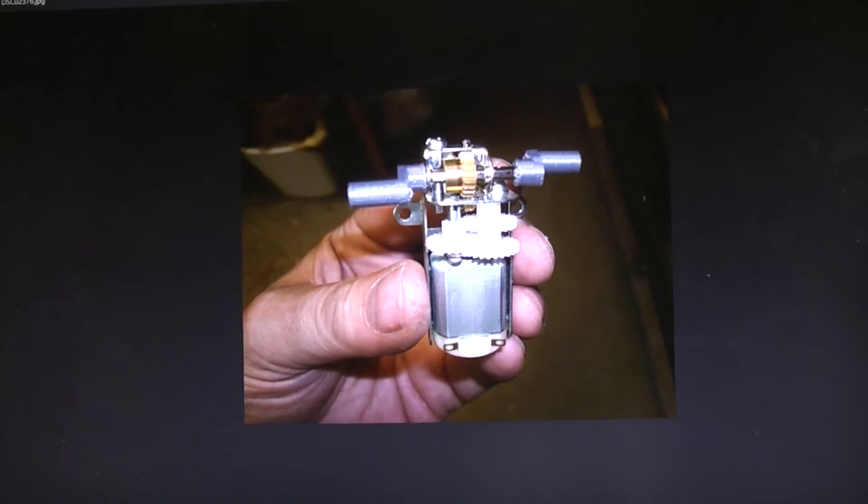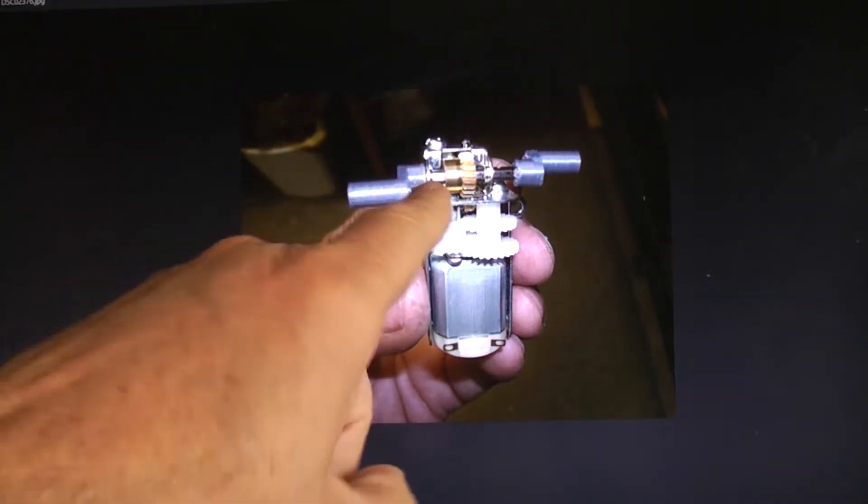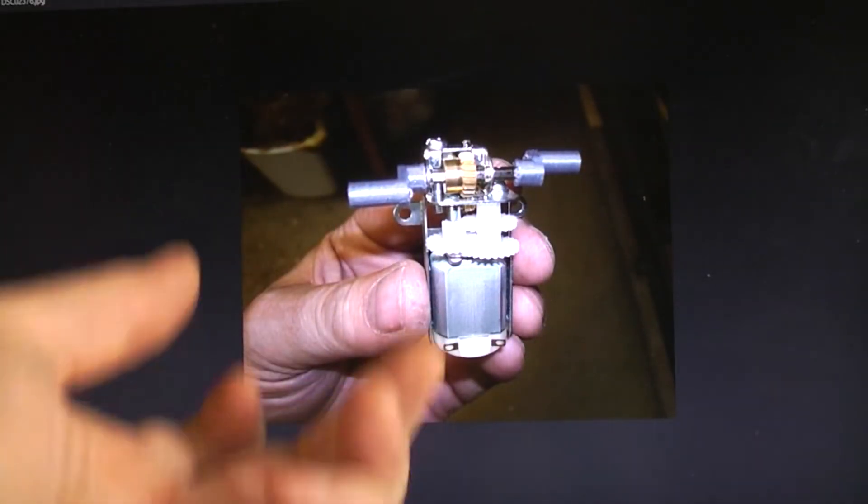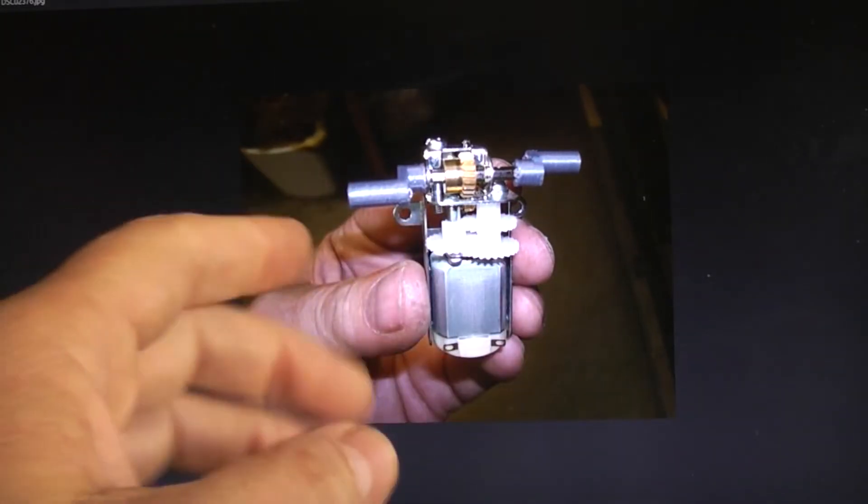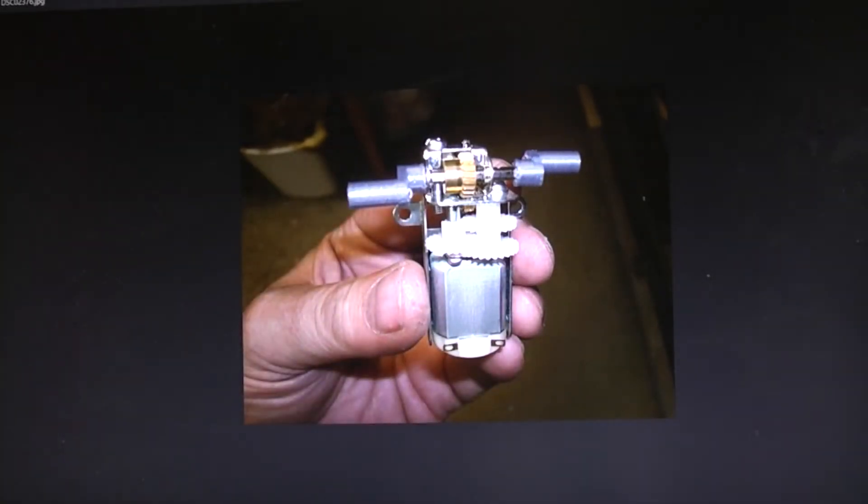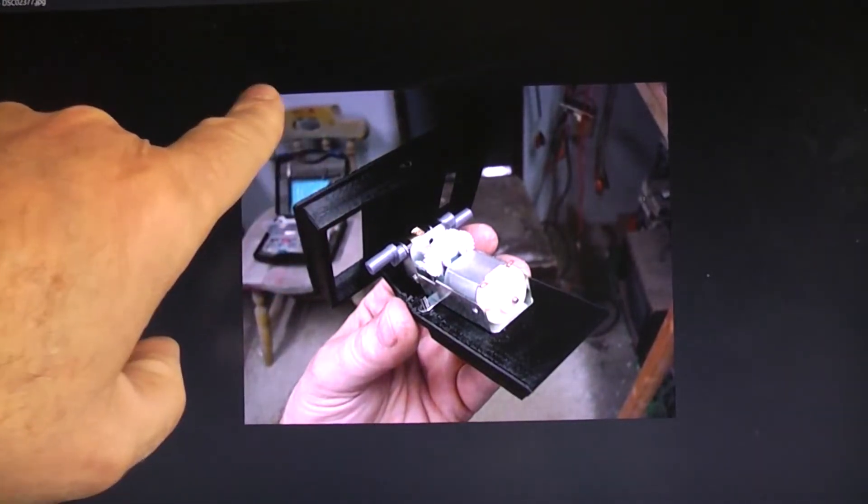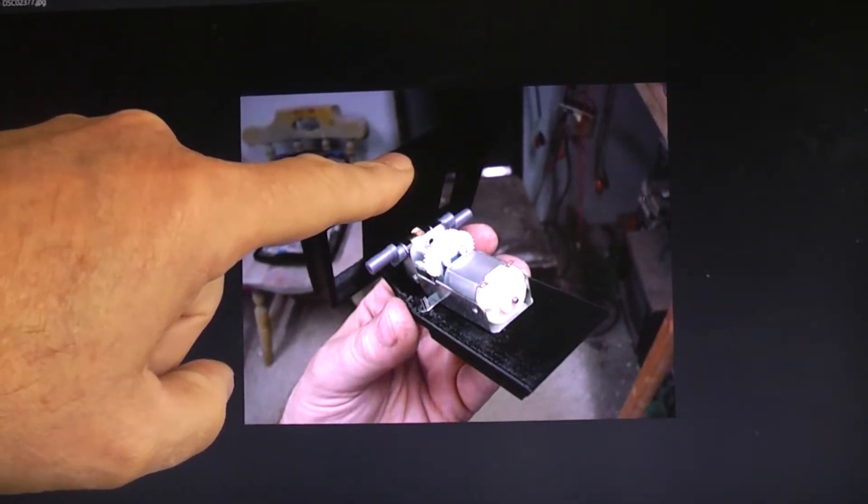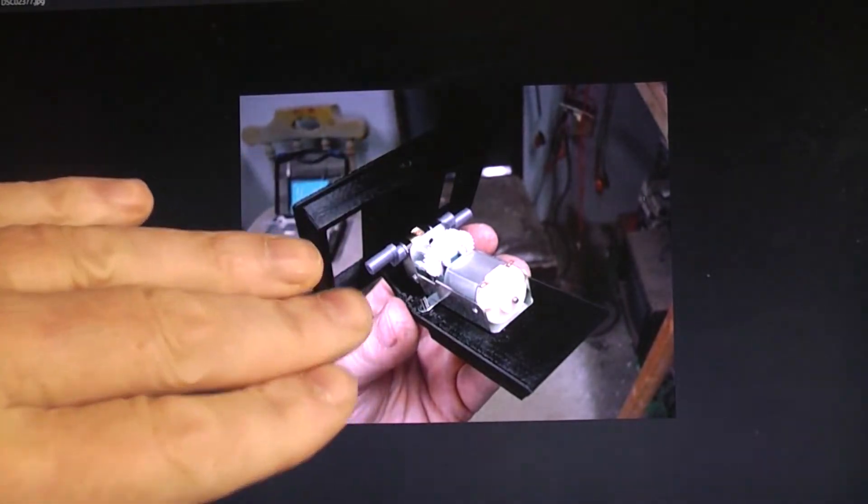There's a close-up of the Tamiya universal gearbox set up the way we're going to be using it. The hexagonal shaft that comes with it has to be cut so that it'll fit when the legs are put into the bottom of the body. The shaft can't be any longer than that, otherwise it would bump into the legs. That's going to set your length of that shaft, and then you press these two cranks onto it.